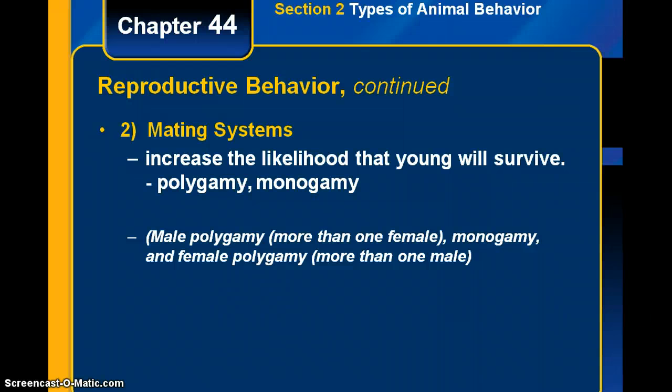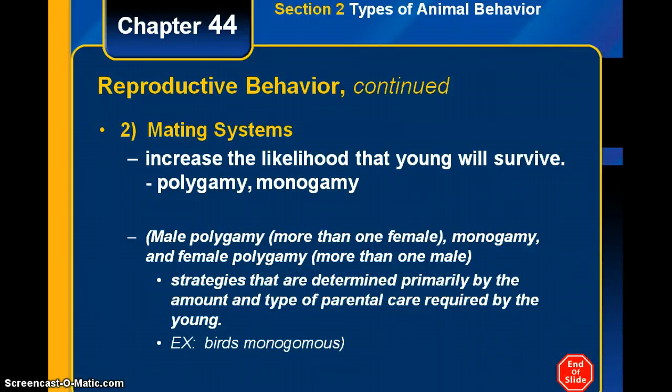These different mating systems have strategies determined primarily by the amount and type of parental care required by the young. Depending on how much care it takes, they may need more than one male or female — chosen not just for more mates, but because of the parenting involved. Many birds are monogamous and mate for life.